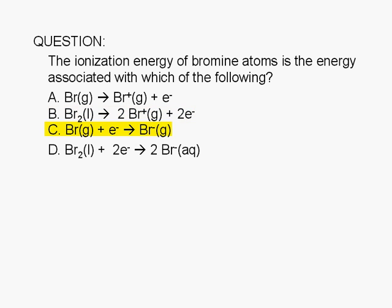C: Atomic bromine in the gas phase plus an electron yields bromine ions in the gas phase.